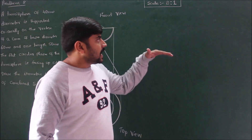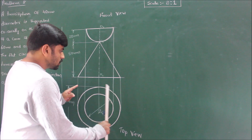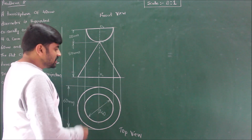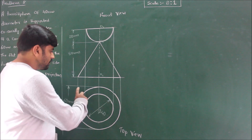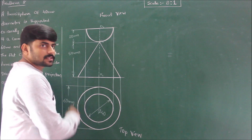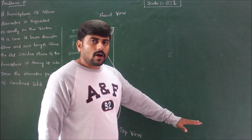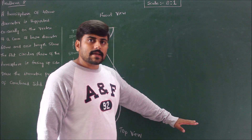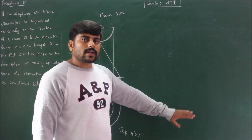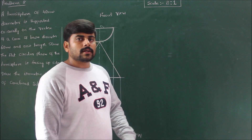To construct the isometric projection, build a square around the two circles. By visual inspection, the cone requires a square of 60 mm × 60 mm. Draw the isometric projection of a square of side 60 mm × 60 mm, and inside that construct the circle by the four-center method.